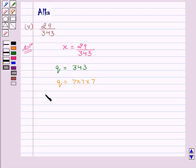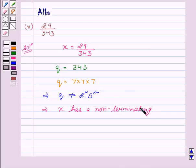This implies that q is not equal to 2 to the power n and 5 to the power m. This implies x has a non-terminating repeating decimal expansion.